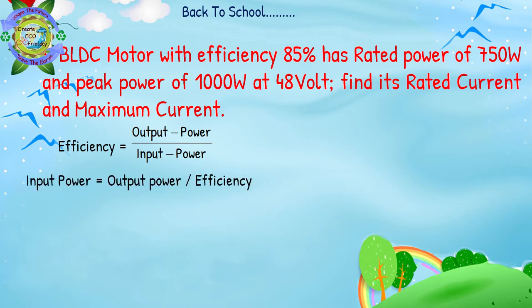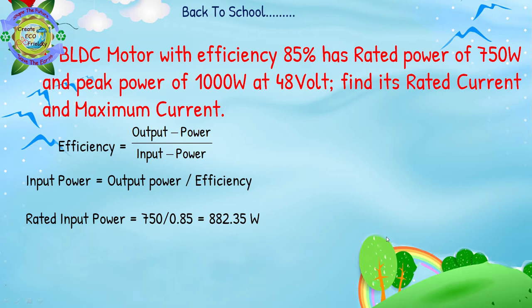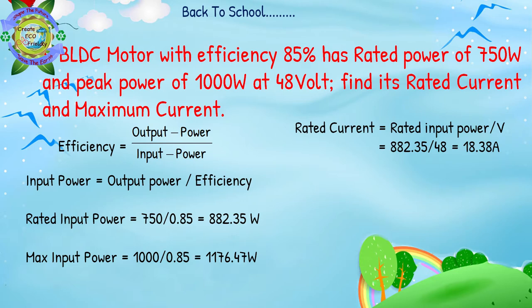Input power कैसे निकालें? Efficiency = output power / input power, इसलिए input power = output power / efficiency। Rated input power = 750 / 0.85 = 882.35 watt। Maximum input power = 1000 / 0.85 = 1176.5 watt। Rated current = rated input power / voltage = 882.35 / 48 ≈ 18 ampere।